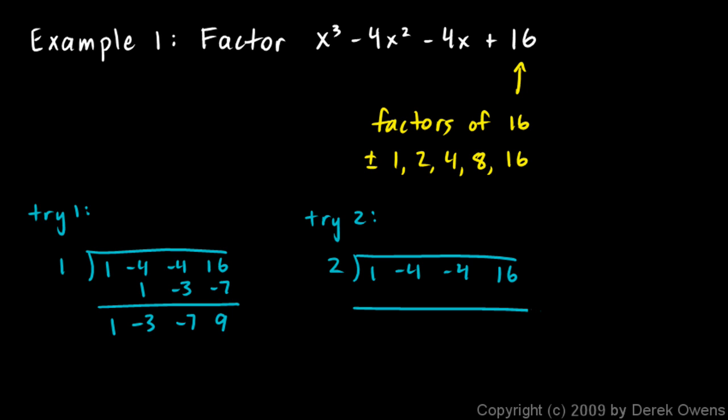And we start with the 1 over there at the beginning here. Bring the 1 down. 1 times 2 is 2. We add negative 4 and 2 is negative 2. Then we multiply. Negative 2 times 2 is negative 4. And we add here, and we get negative 8. Negative 8 times 2 is negative 16. And we add, and we get 0. And we found it.